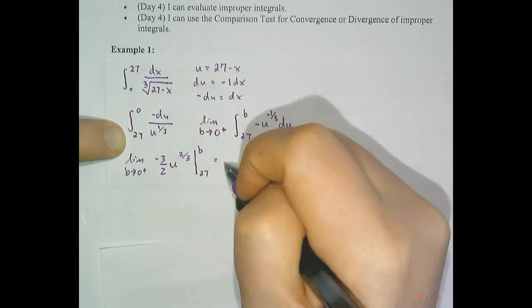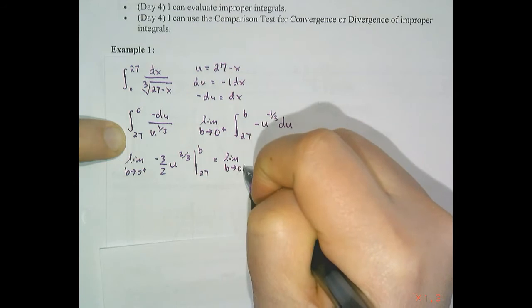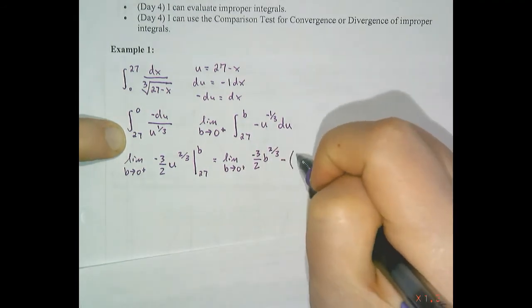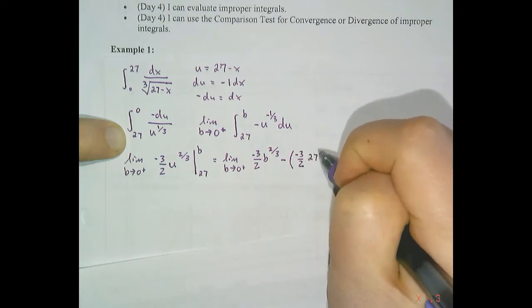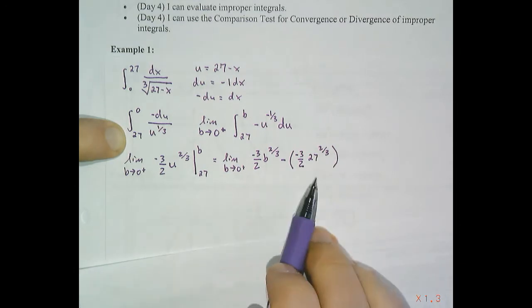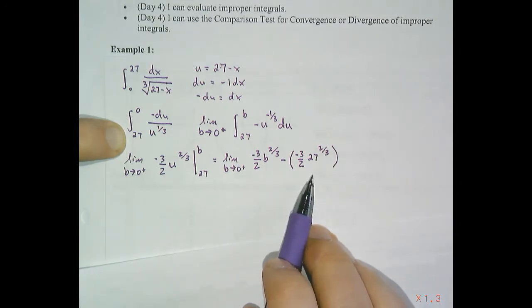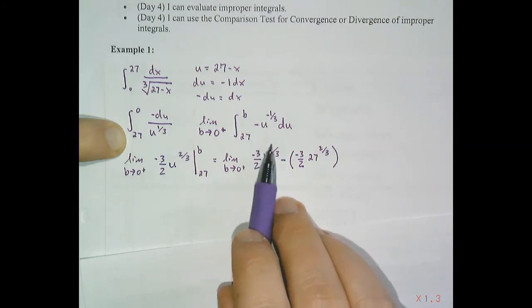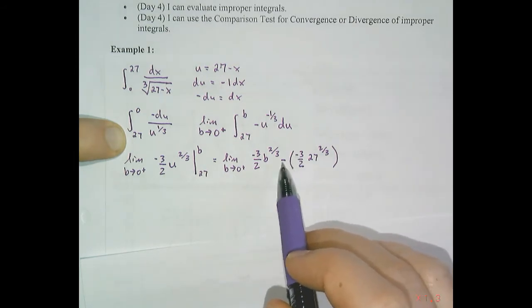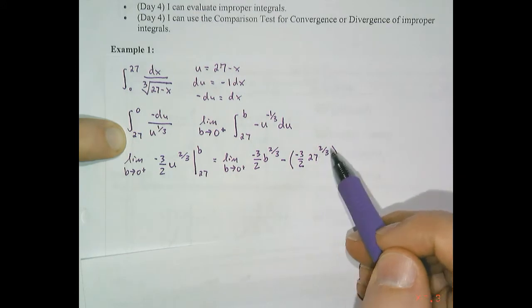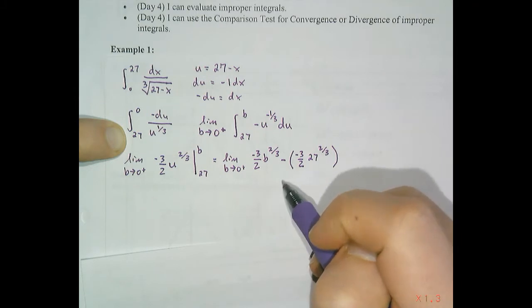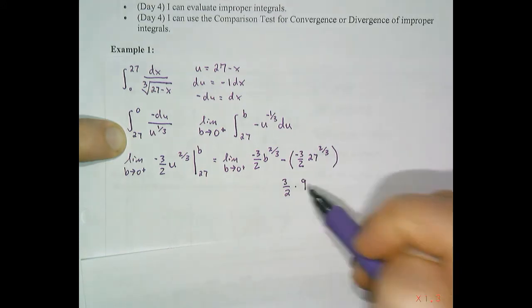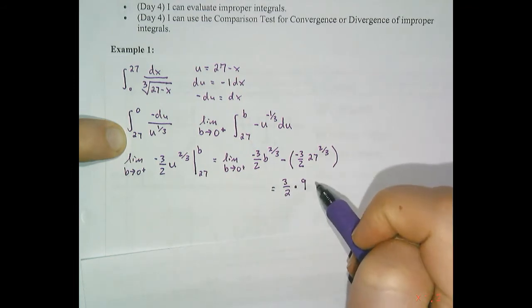When we evaluate this limit expression — the limit as b approaches zero from the right of negative three-halves b to the two-thirds, subtract negative three-halves times 27 to the two-thirds — as b approaches zero from the right, the first expression approaches zero. The two negatives cancel, giving us three-halves times 27 to the two-thirds. Since 27 to the two-thirds is the cube root of 27 (which is 3) squared (which is 9), our expression equals three-halves times 9, or 27/2.